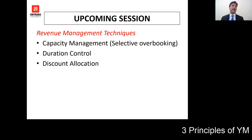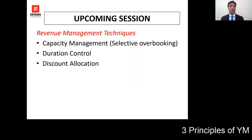In the upcoming session, I will discuss revenue management techniques: capacity management, duration control, and discount allocation — the three techniques managers use on a daily basis to maximize revenues. Capacity management talks about selective overbooking — how much to overbook and when. Duration control refers to the number of nights a guest can book a hotel room. Discount allocation is about maintaining a healthy discount percentage, because hotels thrive on giving discounts but the percentage must be carefully maintained.